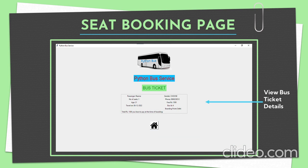The next page shows a sample bus ticket, which includes the passenger name, number of seats, age, traveling date, gender, phone number, fare in rupees, bus ID, and boarding point. If you want to book another ticket, you can go to the home option. This is my overview of the project.